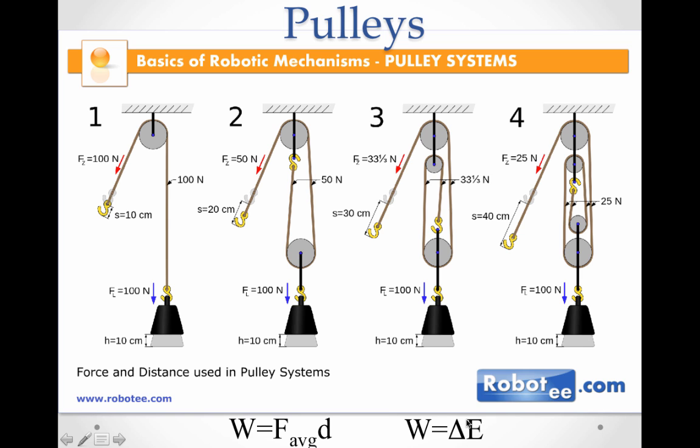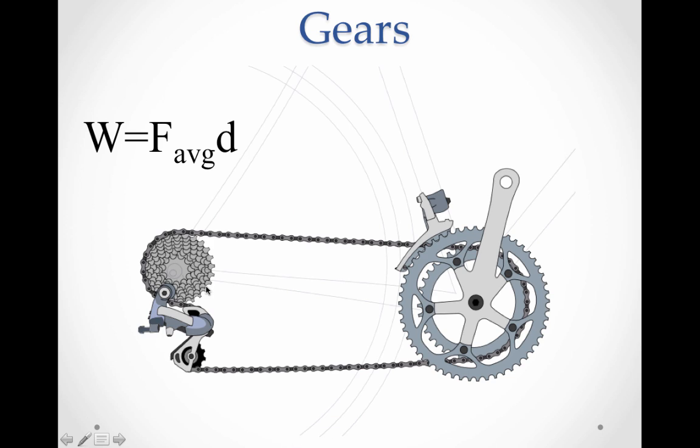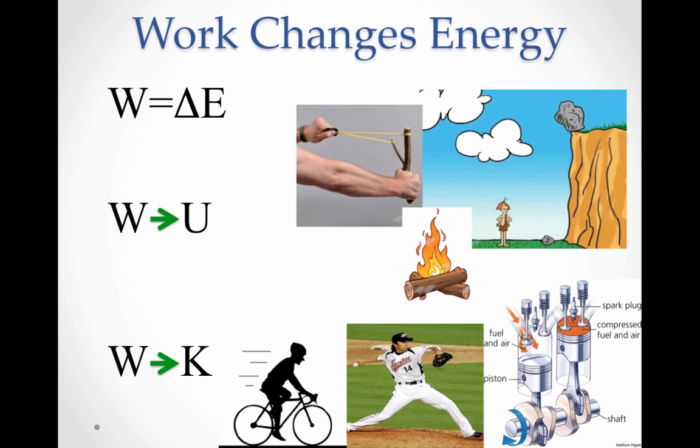The work we're doing is changing the energy in the system. There are other systems as well, such as gears. And gears on a bike, for example, when you change gear on a bike, it might be easier to pedal, but you have to pedal more to move the same distance. So gears also give us mechanical advantage. So let's go back and do a little review here.